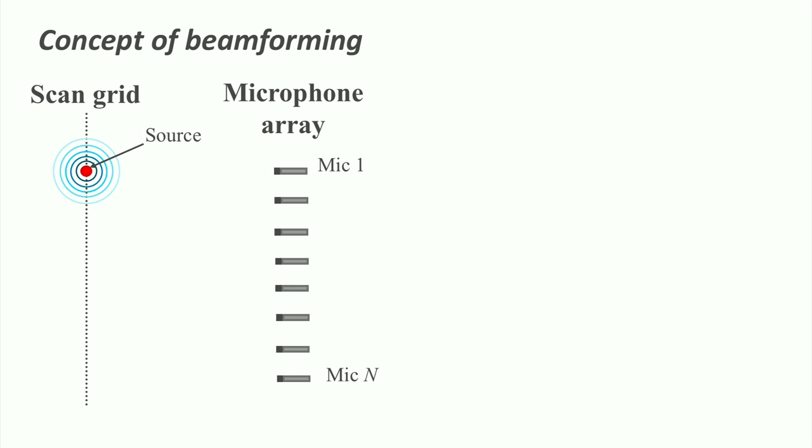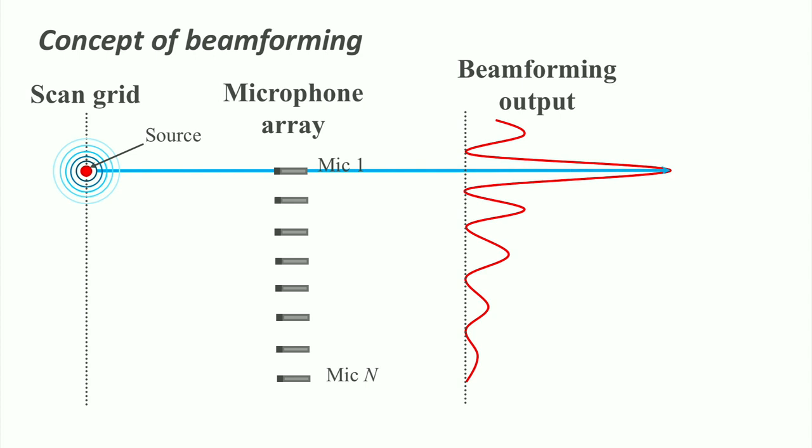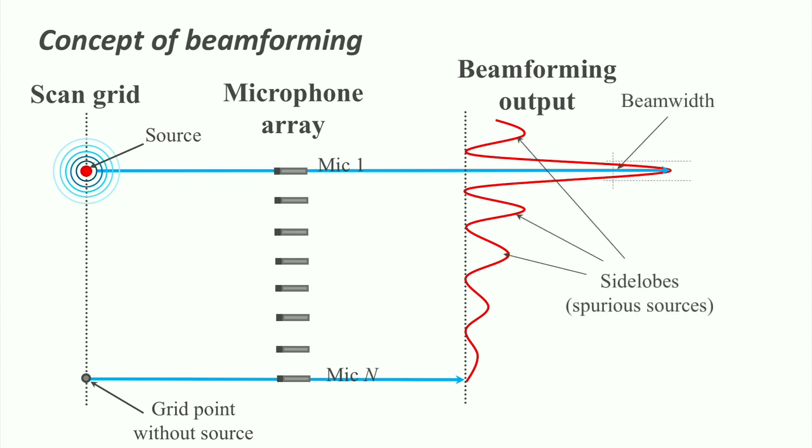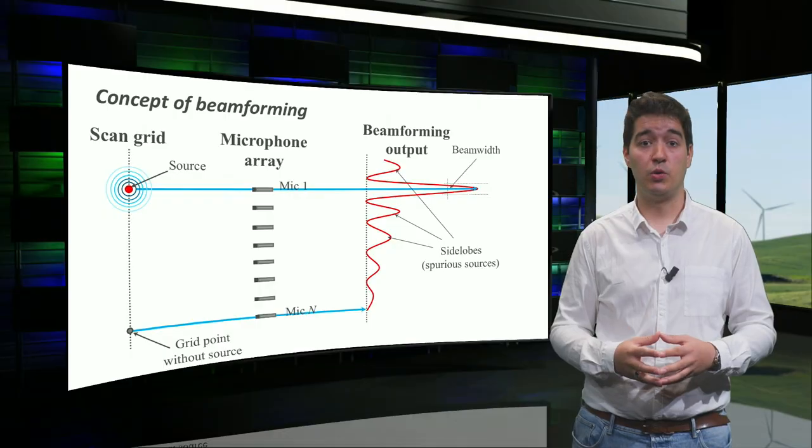If we consider a grid point without a sound source, we obtain a much lower value. We can already see that the end result has some limitations, like the side lobes, spurious sources, and the beamwidth of the main lobe, which limits our resolution.